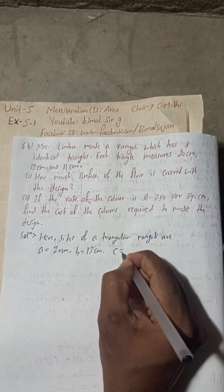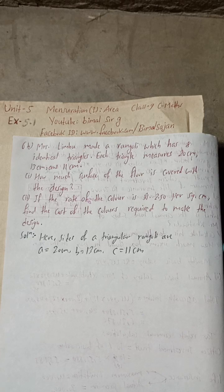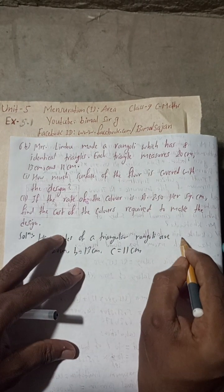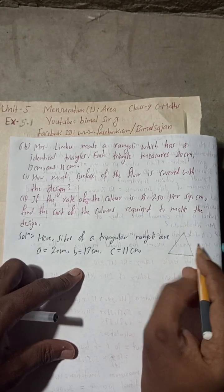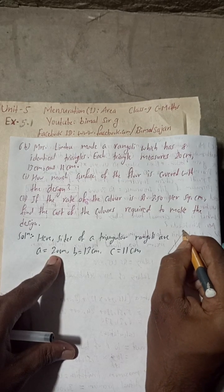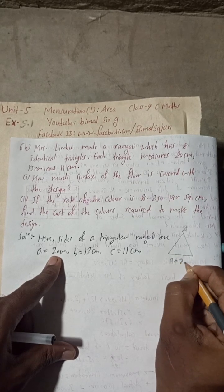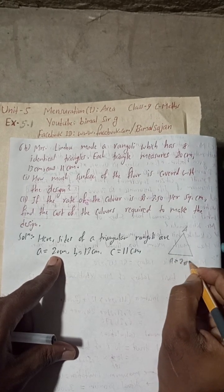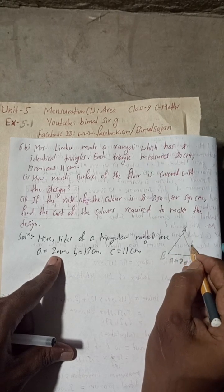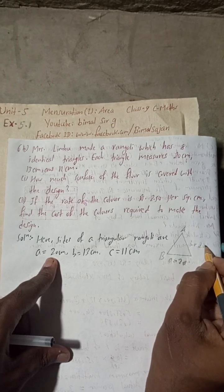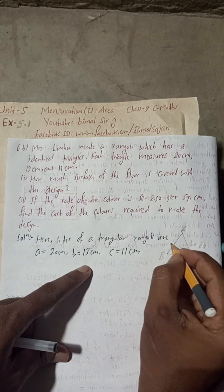If you want to understand, then understand by this figure. Suppose this is a triangular shape. If this is angle A, then this side is small a, which is 20 cm. If this corner is B, then this side will be small b = 13 cm. And if this is capital C, then this side will be small c = 11 cm.